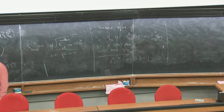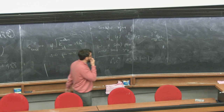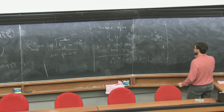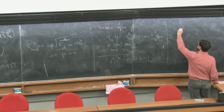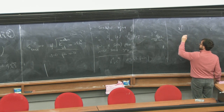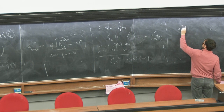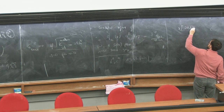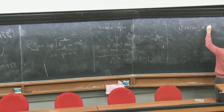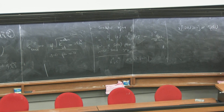You can now compute this cohomology — this exercise is actually not so easy — and what you discover is a rather elegant result. The VOA of this SU(2) super QCD is nothing but the SO(8) current algebra at level minus two.